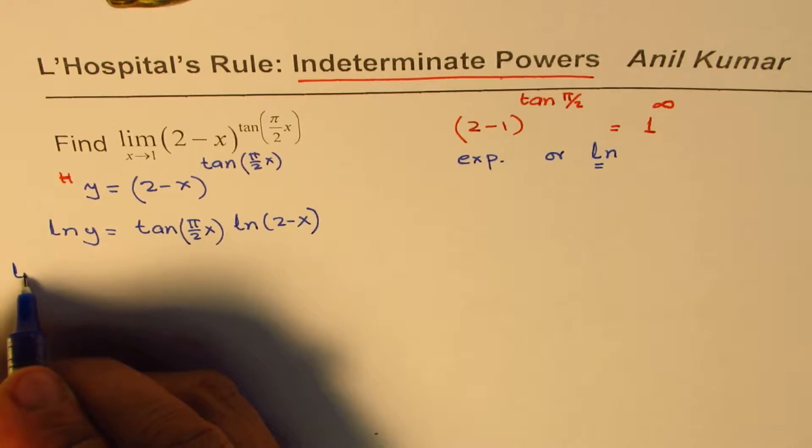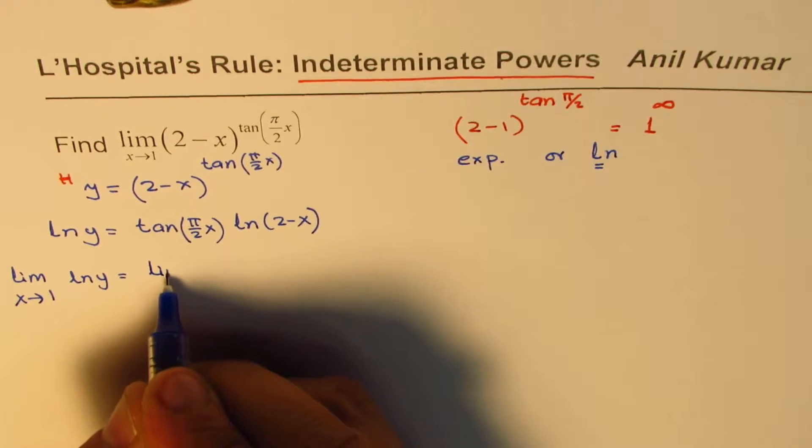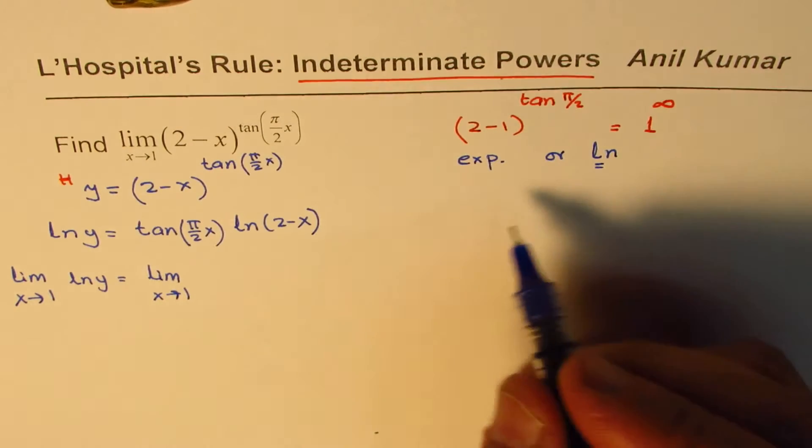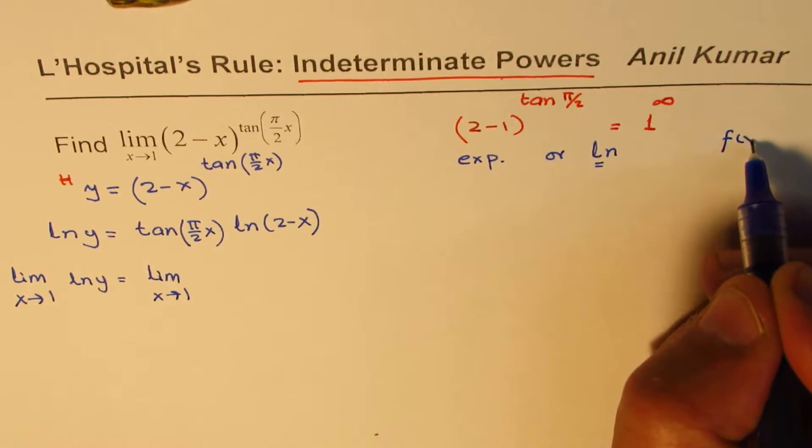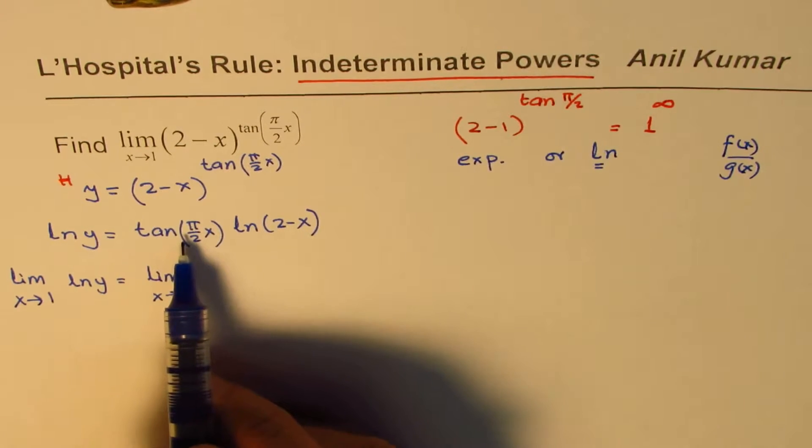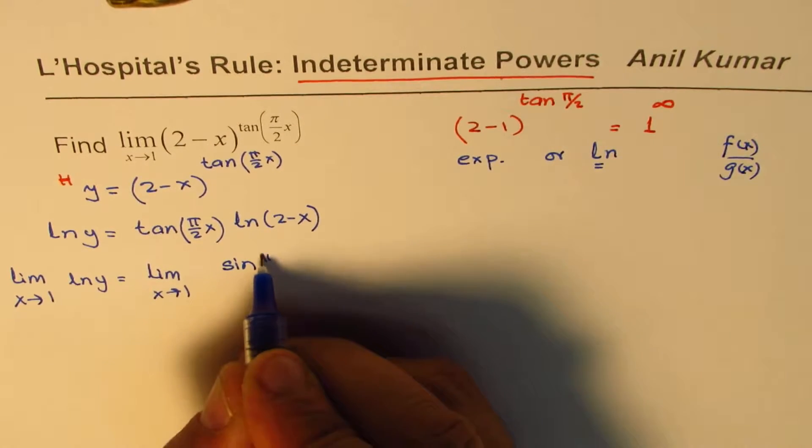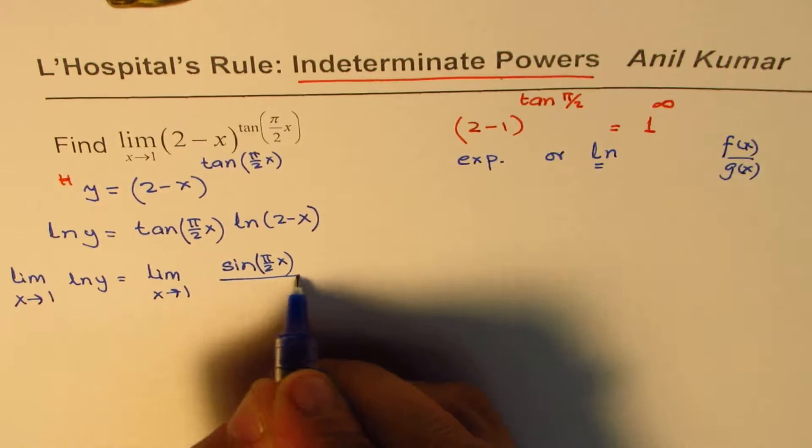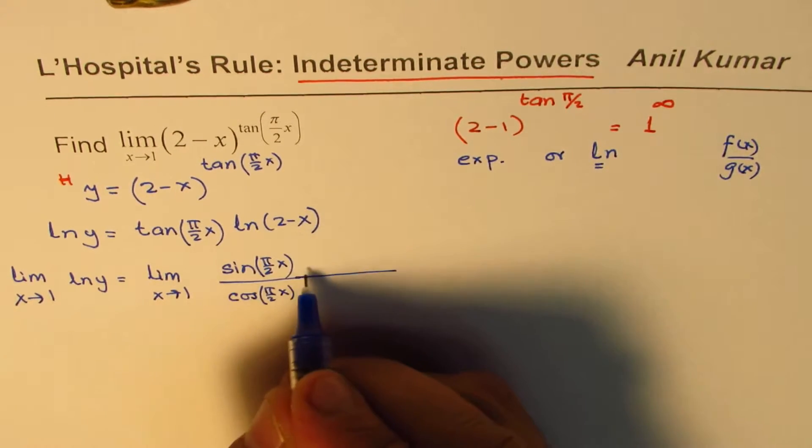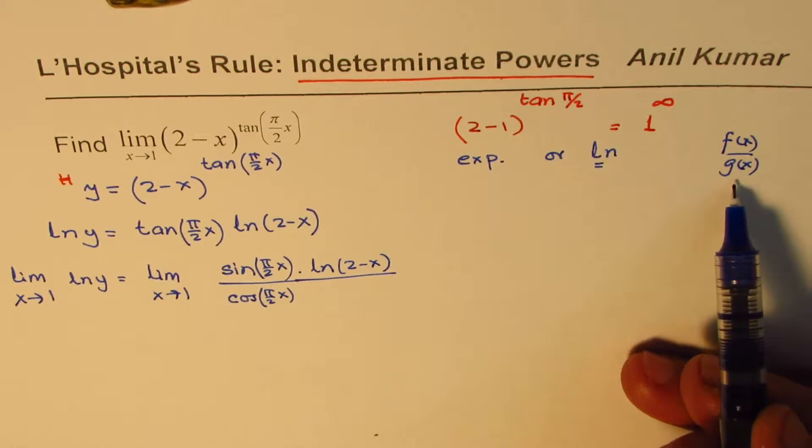Now we'll take limit on both sides. We say limit x approaches 1 for ln(y) equals limit x approaches 1. Now whenever you're applying L'Hôpital's rule, you should have the form of the quotient, that is f(x) over g(x). Now you can do it easily here. Tan could be written as ratio of sine and cosine, so we'll write this as sin(πx/2) over cos(πx/2). And we already have this ln(2-x) in the numerator. So now we have this f(x) over g(x) form, the quotient form.